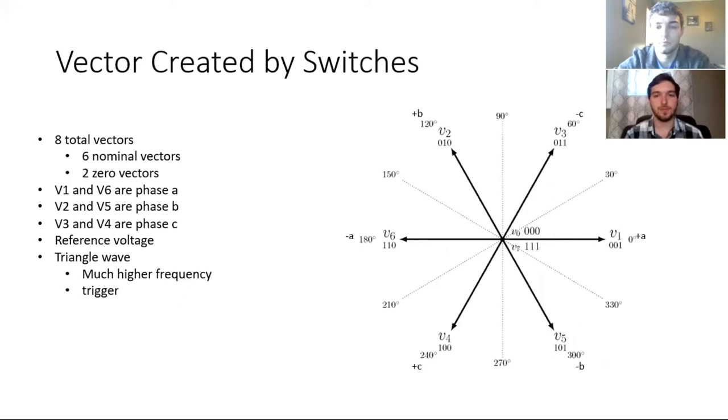These switches create vectors depending on their positions and they create eight total vectors on their combinations. So there's six nominal vectors as shown on the right there and two zero vectors. The two zero vectors are whether all switches are on or all switches are off. Vectors one and six go with leg A, vectors two and five go with leg B, and vectors three and four go with leg C. So if you had a reference voltage, let's say at 30 degrees, we'd know that we'd need to use vector one and vector three to find that reference voltage.